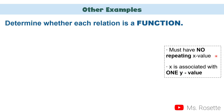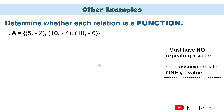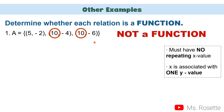Example number 1: we have set A, which is equal to (5, −2), (10, −4), and (10, −6). You will just be looking at the first coordinates, the x values, to determine if this is a function or not. We have 5, 10, and another 10 — two 10s in the x value. Therefore, this is not a function because we have repeating x values.